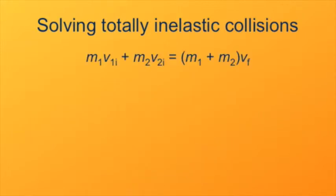We start with where we left off: on the left we have the total momentum of the system, and on the right we have the total momentum after the collision. If we're given the masses and velocities of the particles before the collision, it's a simple matter to find their velocity after the collision. Since the final velocity is already factored out on the right-hand side, we divide both sides by the total mass. The final velocity equals the total momentum of the system divided by its total mass — both particles move along with the center of mass after the collision.